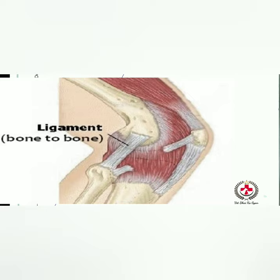Ligament: it is the binding material of a joint — fibrous connective tissue that connects bone to bone. It prevents considerable movement. Examples include joint capsule and collateral ligaments.